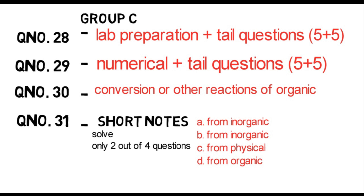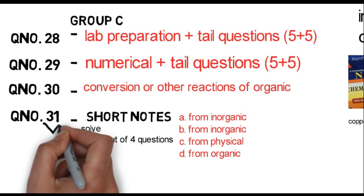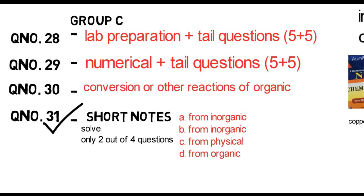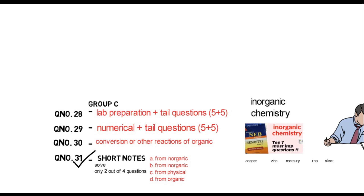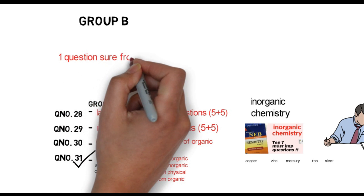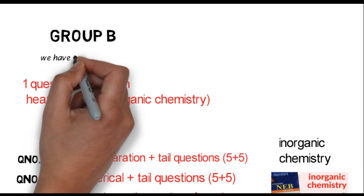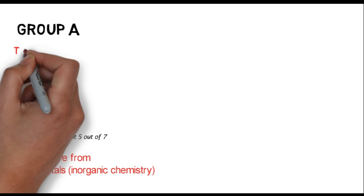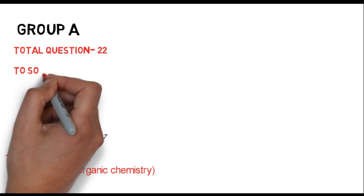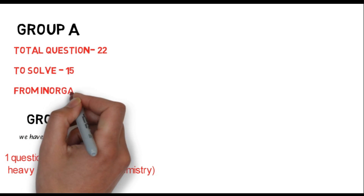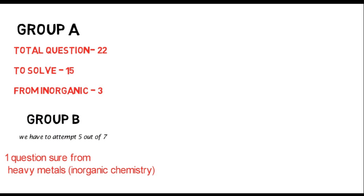So back to the topic: the Group C question pattern. Let me examine what chemistry the exam covers in Group C. Question number 32 covers multiple sub-questions — Question 1, Question 2, Question 3, Question 4, and Question 5, including organic conversion topics.